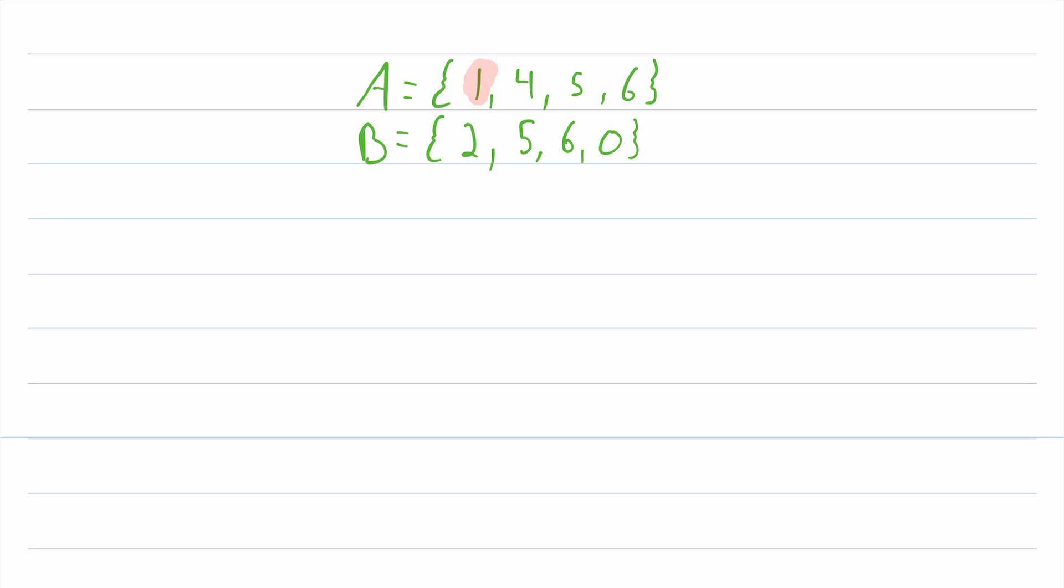A has one, B does not. B has zero, A does not. So their intersection is not empty, they are not subsets of each other, they are overlapping sets.